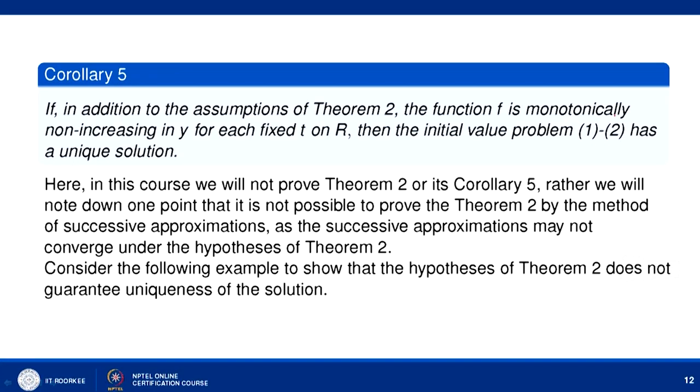In addition to the assumptions of Theorem 2, if the function f is monotonically non-increasing in y for each fixed t on R, then the initial value problem has a unique solution. So to compensate for the loss of the Lipschitz condition, if we add one more condition — that f is monotonically non-increasing in y for each t — then we regain uniqueness of the solution.